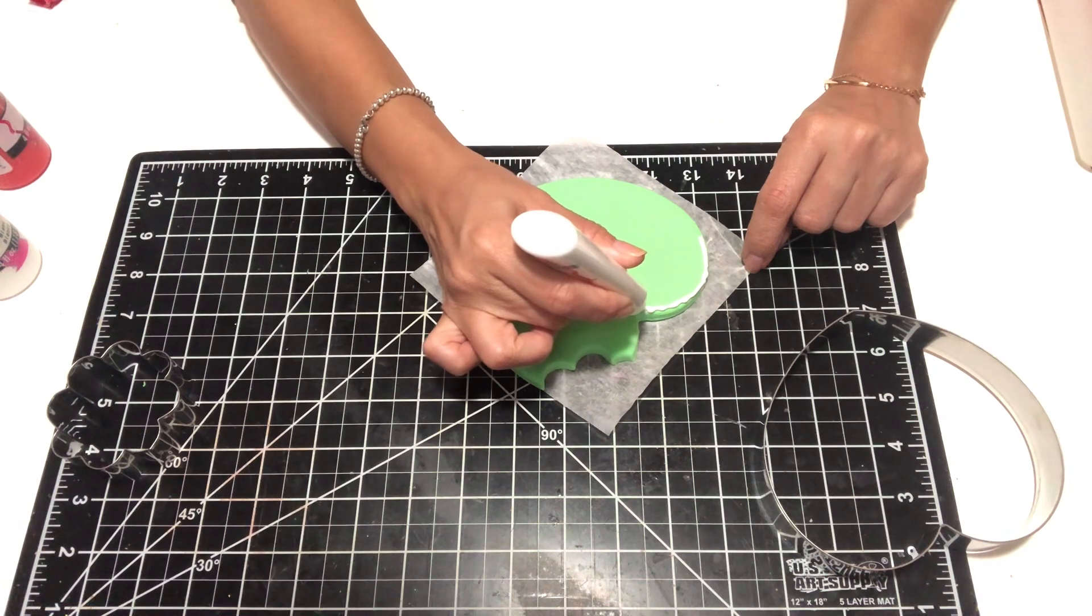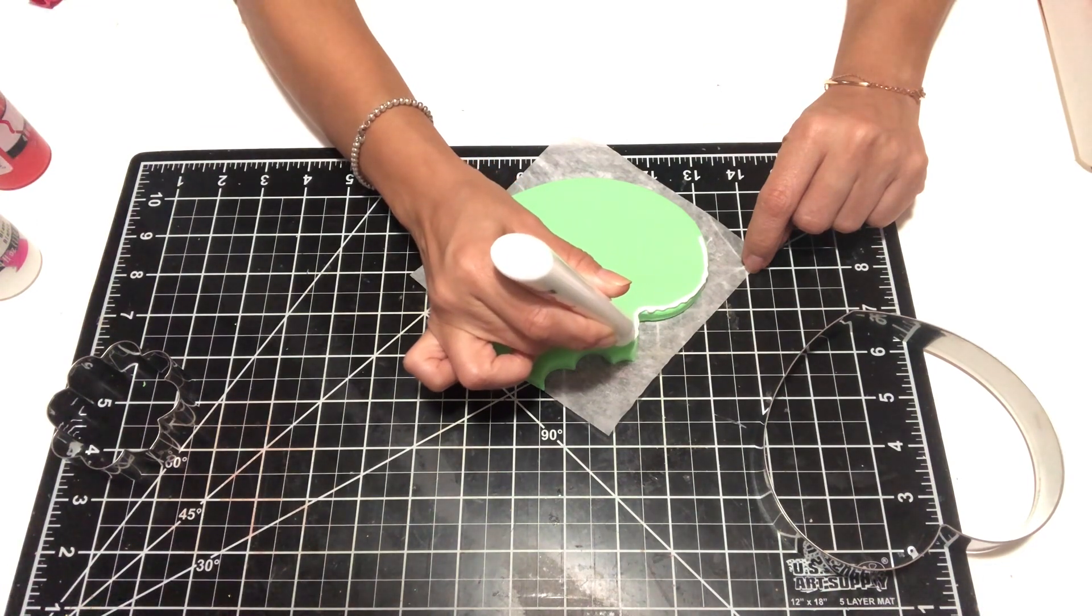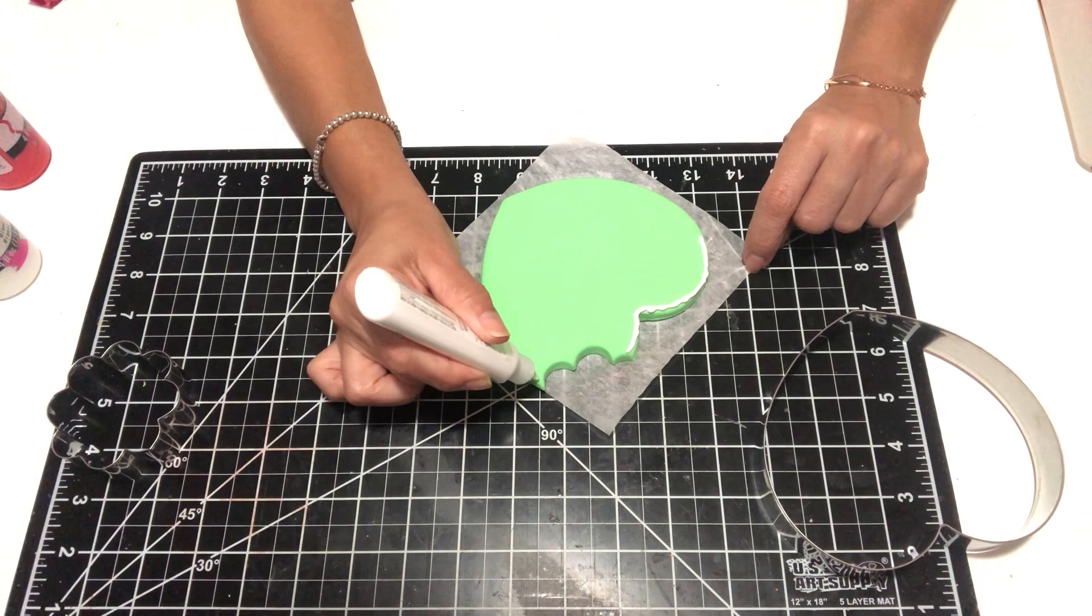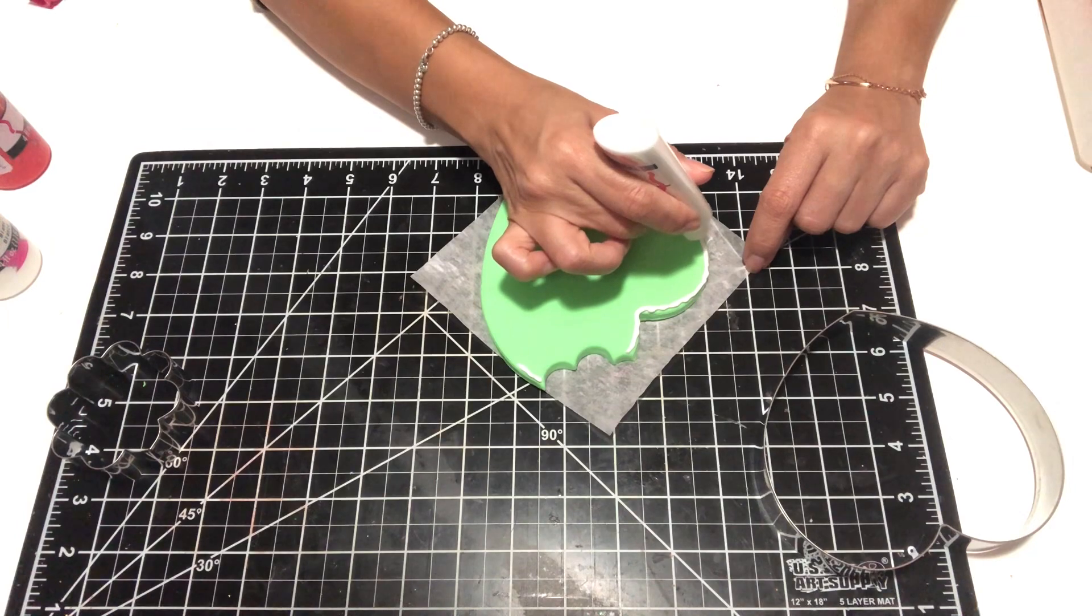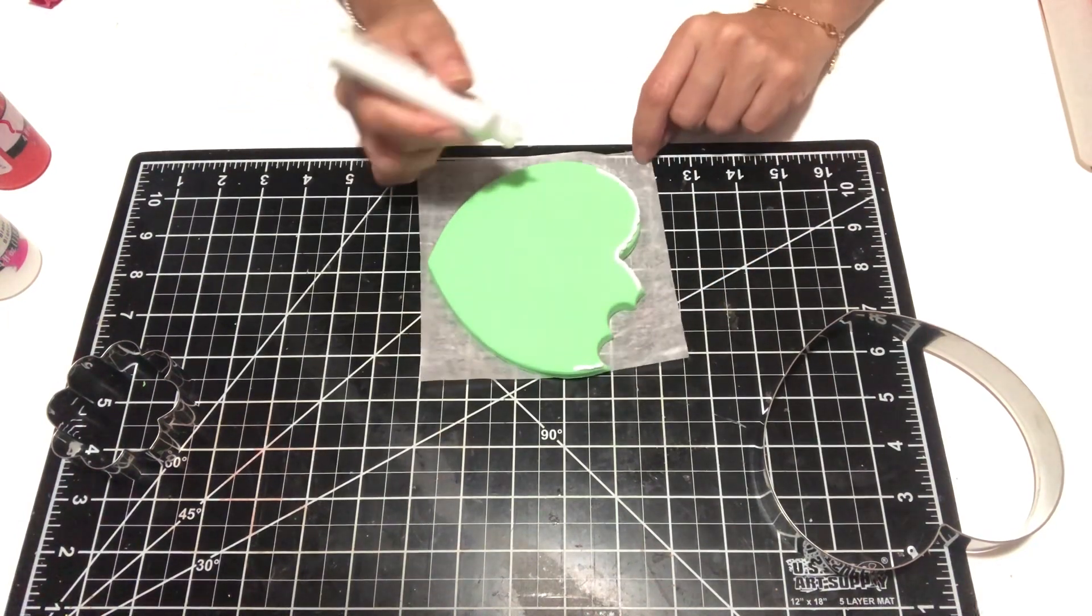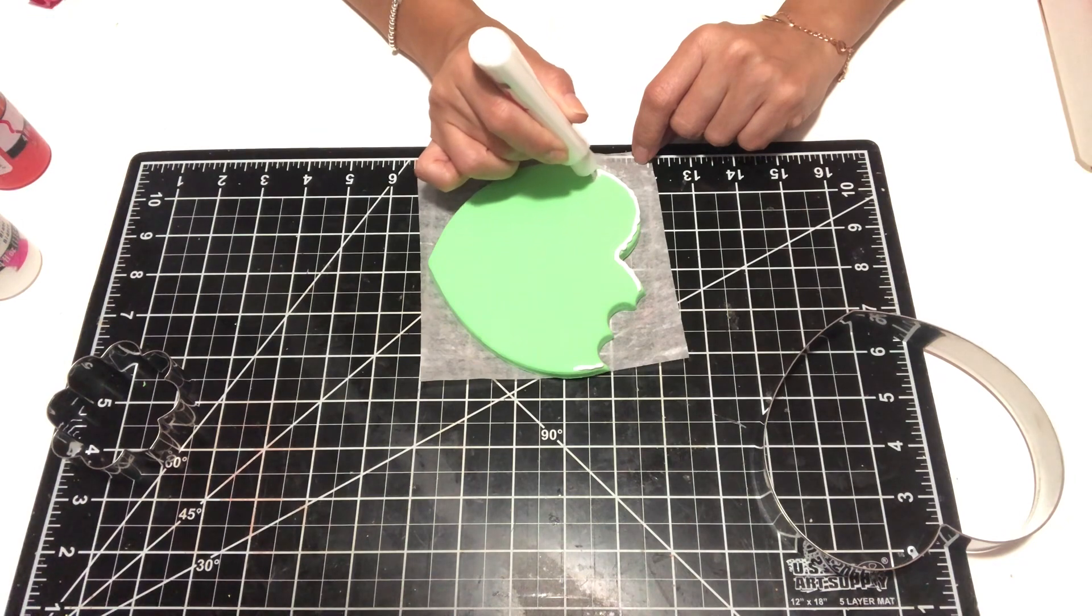Once I'm finished with adding the glitter, then I'm going to go in and add my message across the heart and I'm going to use the color neon if I'm correct. And then I will add the chocolate where I took the bite using the cookie cutter.